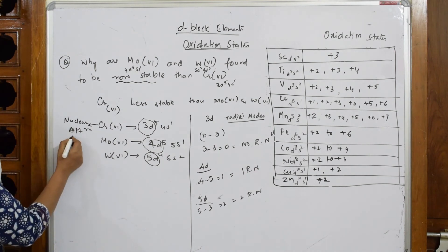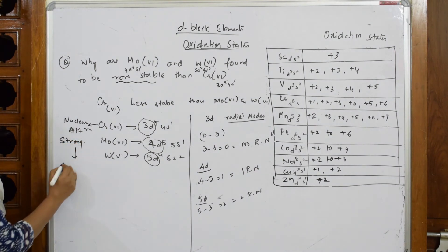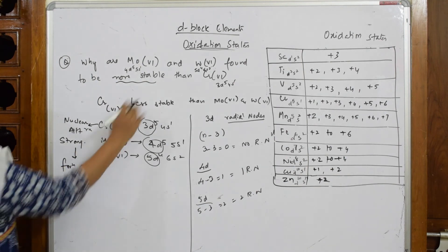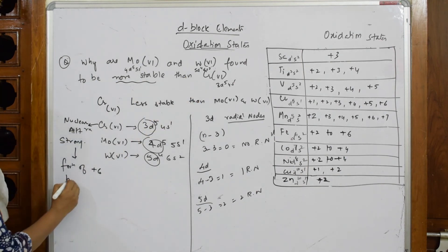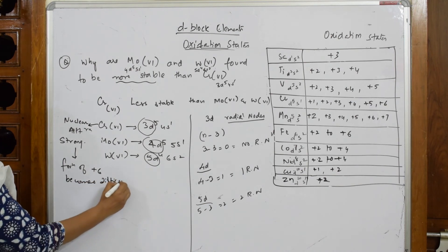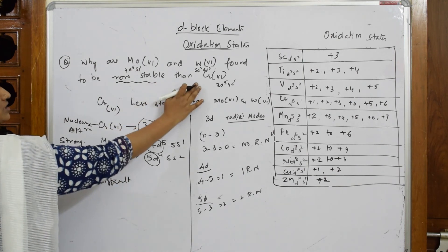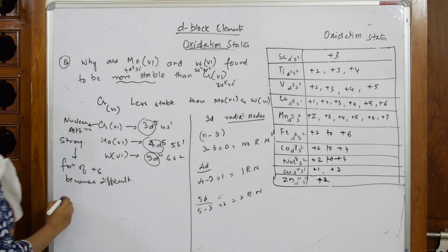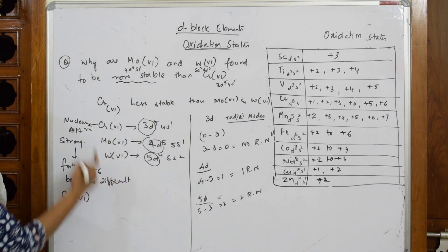isn't it? So nuclear attraction is strong, and when it is strong, formation of +6 oxidation state becomes difficult. When it is becoming difficult, what can I write? The formation or the stability of Cr(6), that is,